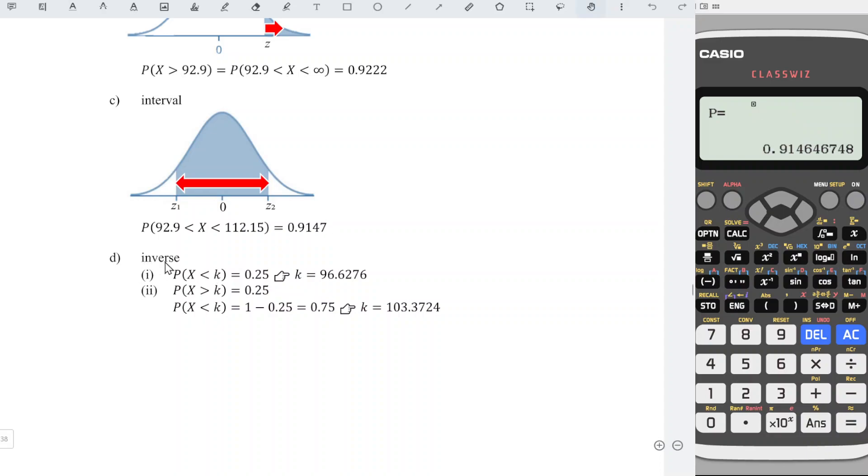D: to obtain the inverse or z-score, the x value, we can go back to menu, distribution, 3 inverse normal. Area here stands for less than cumulative. The calculator can only provide the value that is only for less than cumulative, which means that only workable for less than. If we have more than, we should change to its complement. So let's try for less than first. So we have less than 0.25. This is the area given by the question. So we have 0.25. Sigma and mu given by the question. So we should obtain the correct value. Press equal again.